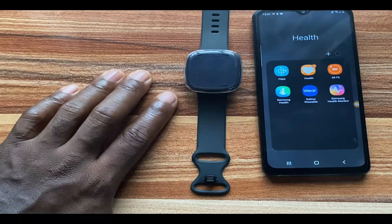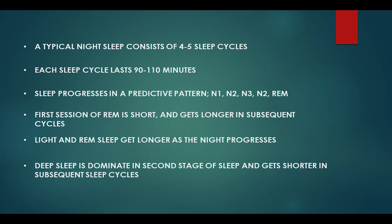A sleep cycle comprises all the various stages of sleep. A typical night's sleep consists of four to five cycles, with each cycle lasting 90 to 110 minutes. Sleep progresses in a predictive pattern following the order N1, N2, N3, then N2 again before REM. The first stage of light sleep lasts about 25 minutes and 10 minutes for REM. As the night progresses, both light and REM stages become longer while deep sleep gets shorter. Deep and REM sleep are also affected by age, as older individuals tend to spend more time in light sleep.